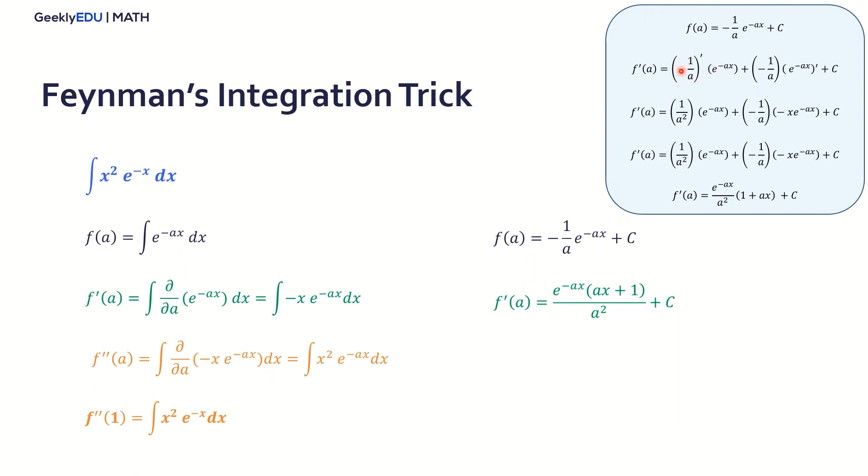So we have the derivative of the first function times the second plus the first function times the derivative of the second. And doing some factoring, you get this result here. Now if you derivate this function once more, you get this result here. It looks big, it looks complicated, but it's not. It's a big derivation, it's a long derivation, but we're just applying the product rule again. And it's easy, right? It's much easier to derivate than integrate.